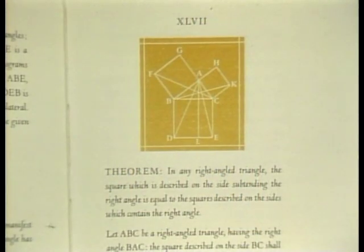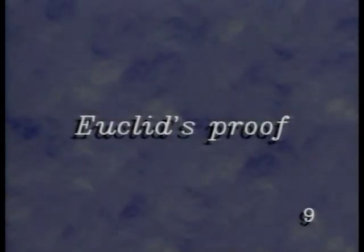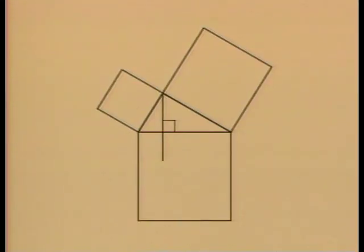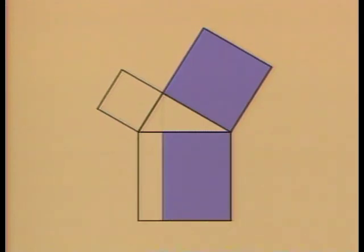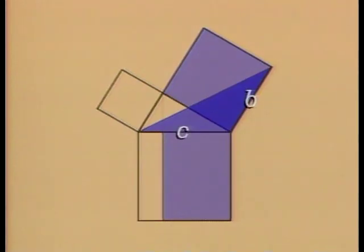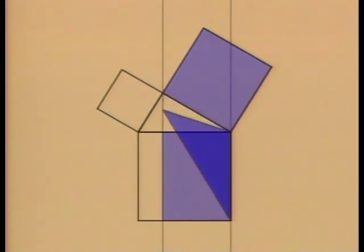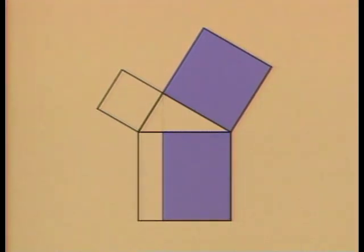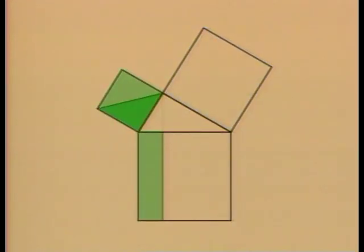The Pythagorean theorem appears in Book 1 as Proposition 47. Draw a perpendicular to the hypotenuse and extend it to divide the large square into two rectangles. Euclid showed that this square and this rectangle have equal areas, and this square and this rectangle have equal areas. This triangle has half the area of the square. Its area doesn't change if we shear it, or if we rotate it. Shearing it once more, we see that its area is half that of the rectangle. So the square and the rectangle do have equal areas, and we can do the same thing on the other side.